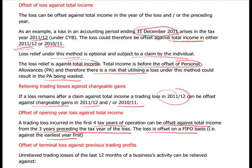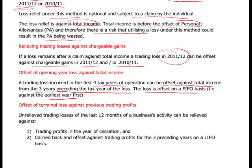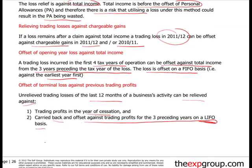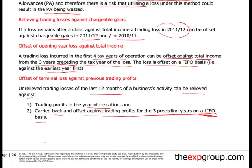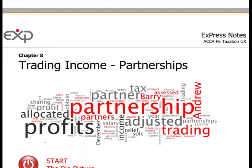The loss is set on a first-in-first-out basis — against the earliest tax years first. There's another way of offsetting a loss: terminal losses. Any unrelieved trading loss of the last 12 months can be relieved against trading profits in the year of cessation, and carried back and offset against trading profits for the three preceding years on a LIFO — last-in-first-out — basis. It's quite a lot to learn; it might be worth working your way back to see what's gone on, and then we'll go into chapter 8 in the next recording.